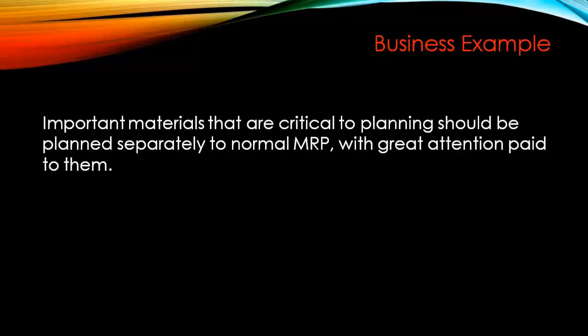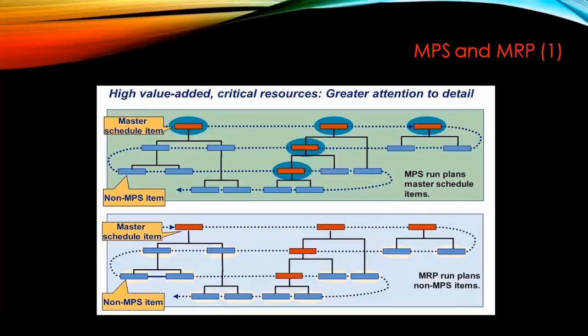In any company there are some critical products — they can be critical because of various reasons, for example they require some special resources, they are too costly to build, or some other reason. These are called important or critical materials, and you want to plan them separately in your planning system, meaning not via MRP but via a separate system. We can use Master Production Scheduling for this purpose.